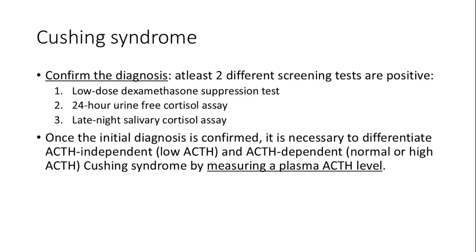Cushing syndrome diagnosis requires at least two positive screening tests from three options: low-dose dexamethasone suppression test, 24-hour urinary free cortisol assay, and late-night salivary cortisol assay. Differentiating between ACTH-independent and ACTH-dependent forms is crucial for determining the appropriate treatment strategy.